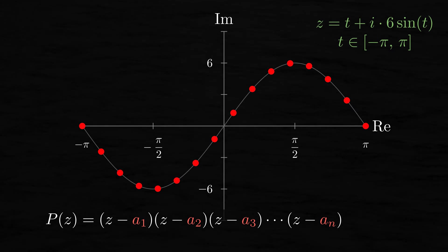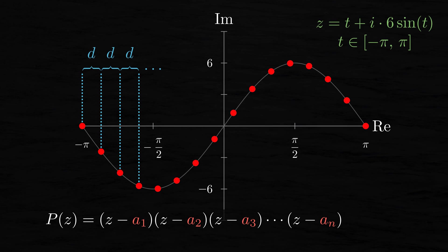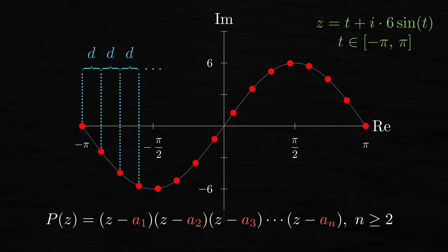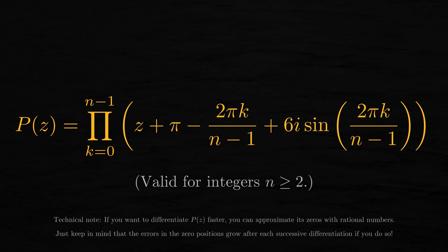Actually, before I show it to you, feel free to pause the video to try to work out the expression for such a polynomial with n zeros on your own. It doesn't take that much effort. Remember, the horizontal distance between any adjacent pair of zeros should be constant. Also, you're allowed to use the restriction that n is greater than or equal to 2. Are you done? Great! Here's one such polynomial.